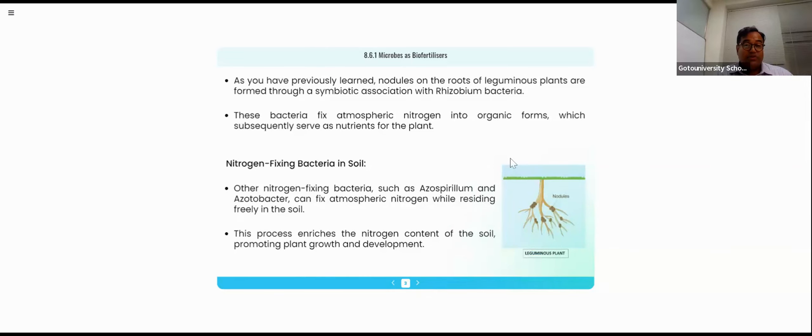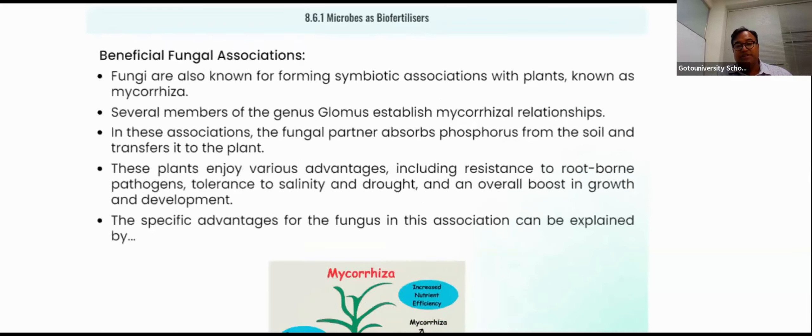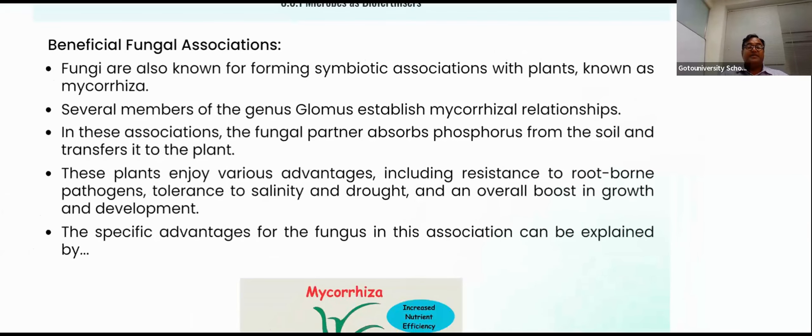Now we are coming further. Nitrogen fixing bacteria as I already told you which we are growing at the massive level. So fungal association, the beneficial fungus like Mycorrhizum which is growing along with the plant Glomus.